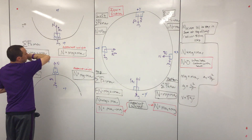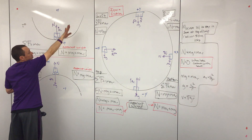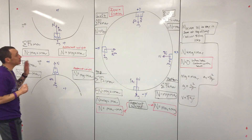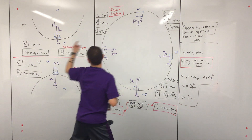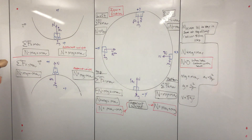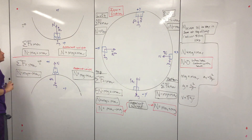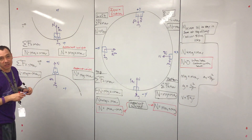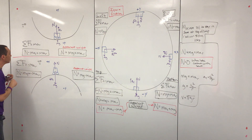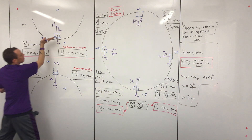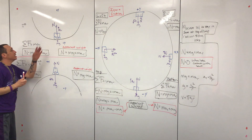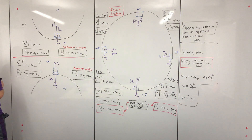Once we have our free body diagram, and we've located the force towards the center of motion, we draw our Newton equation. Newton's second law will always be applied to circular motion. We're asked to describe a car going through a dip in terms of circular motion, so that's why we're using Newton's second law. Keep in mind this is just in terms of uniform circular motion.